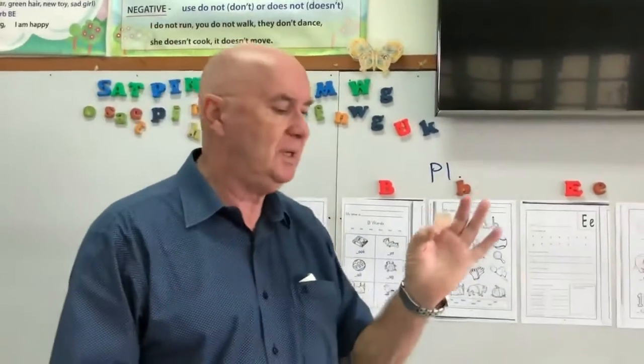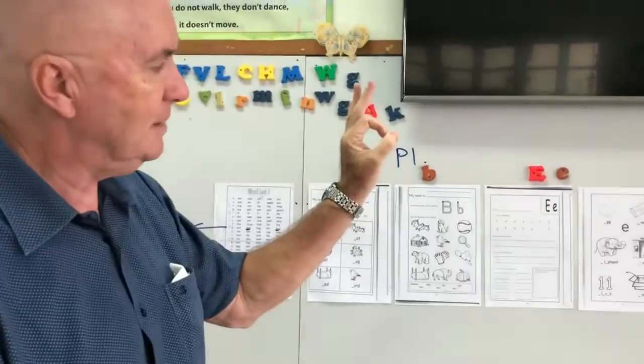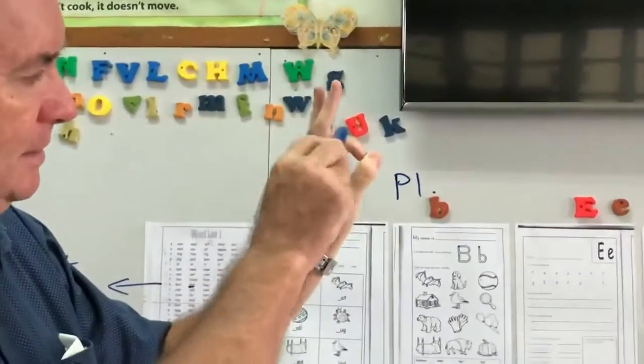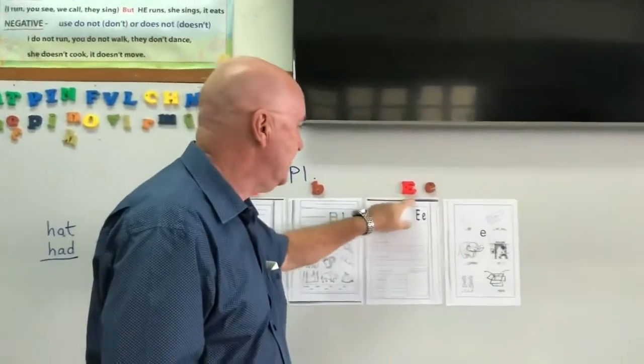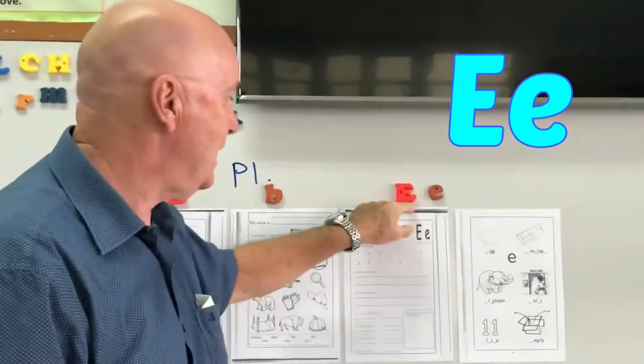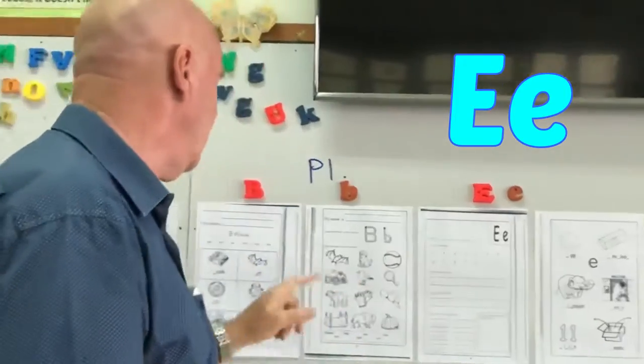OK, B is like that, isn't it? Like that. B, B. And letter E. Big E and little E. So let's look.